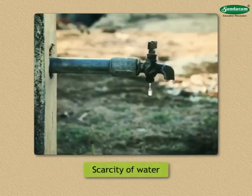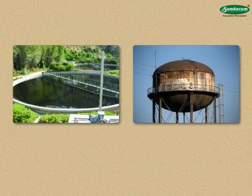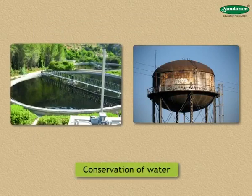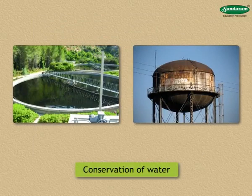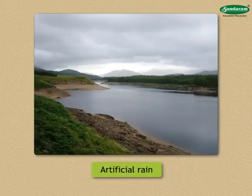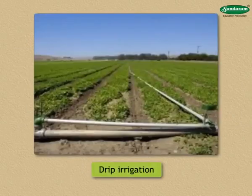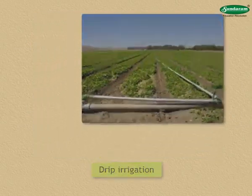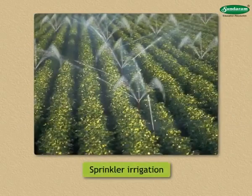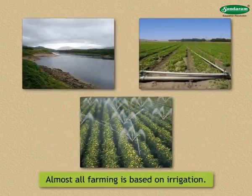Scarcity of water is the main environmental problem here, but the people of this country have found various effective measures for water conservation. Some of the schemes implemented are artificial rain, drip irrigation, and sprinkler irrigation. Almost all farming is based on irrigation.